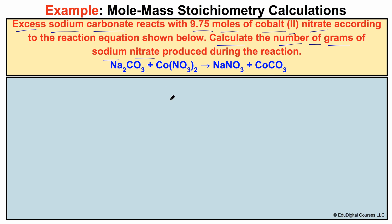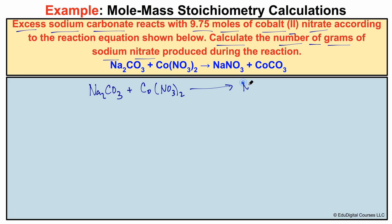The very first thing we're going to do is rewrite and balance this chemical equation — that's the first step in any stoichiometry problem. In this problem we have sodium carbonate, Na₂CO₃, reacting with cobalt-2 nitrate, Co(NO₃)₂, producing sodium nitrate, NaNO₃, plus cobalt-2 carbonate.